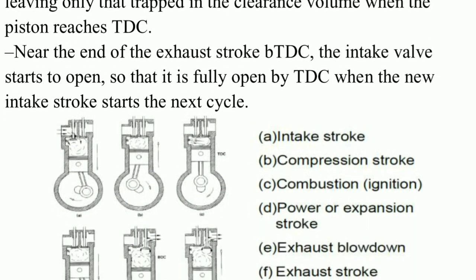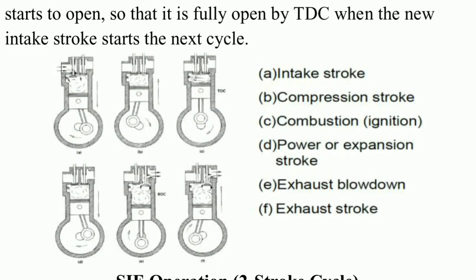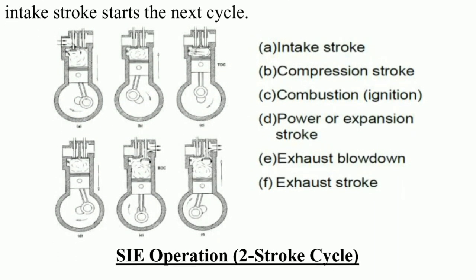Near the end of the exhaust stroke, the intake valve starts to open so that it is fully opened by TDC when the new intake stroke starts the next cycle. The figures illustrate: A — intake stroke, B — compression stroke, C — combustion or ignition, D — power or expansion stroke, E — exhaust blowdown, and F — exhaust stroke.